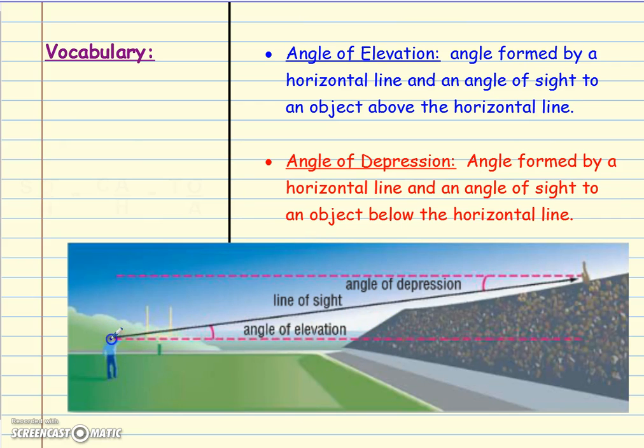So if you're this person, you're looking normally straight across—that's your horizontal line—but then maybe you notice your mom's waving at you in the stands and you look up. That would be an angle of elevation because you are looking up, so that angle from where your normal sight is, looking up.